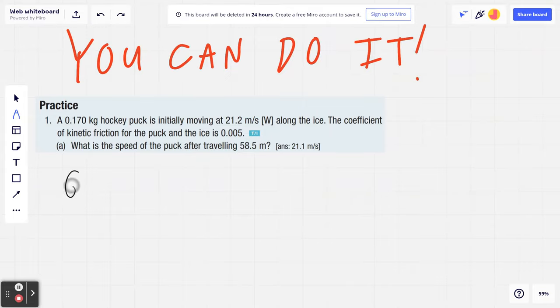Step one, I'm going to use the GRASS approach, G meaning given. From the first sentence, we know that m is 0.170 kilograms. Likewise, 21.2 meters per second west is the initial velocity. You can write down V1 or Vi depending on your teacher or textbook, but I'm going to write V1 and V2 in this example.